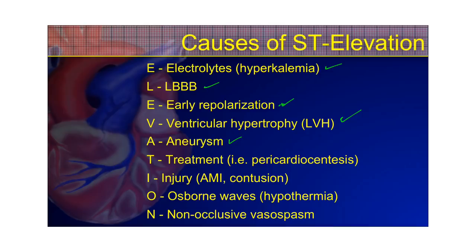T is for treatment — a pericardiocentesis can cause ST elevation. I is for injury — that is an acute myocardial infarction, which is what a STEMI is; you can also use I for ischemia or infarct. O is for Osborne waves — hypothermia can cause changes on a 12-lead EKG that make the J-point appear elevated, sometimes called J-waves. These shouldn't be used to diagnose hypothermia; we have thermometers for that. N is for non-occlusive vasospasm, such as Prinzmetal's angina.